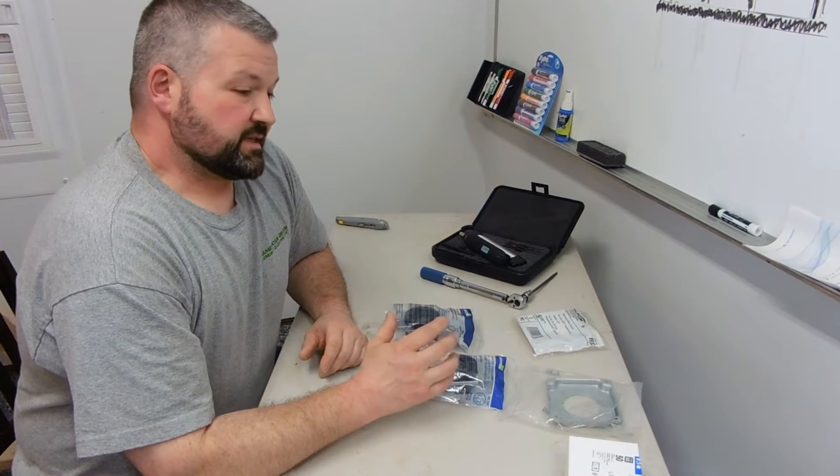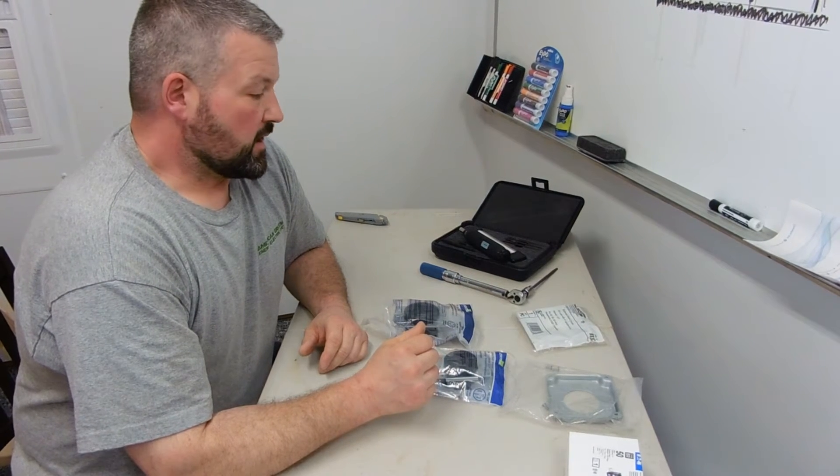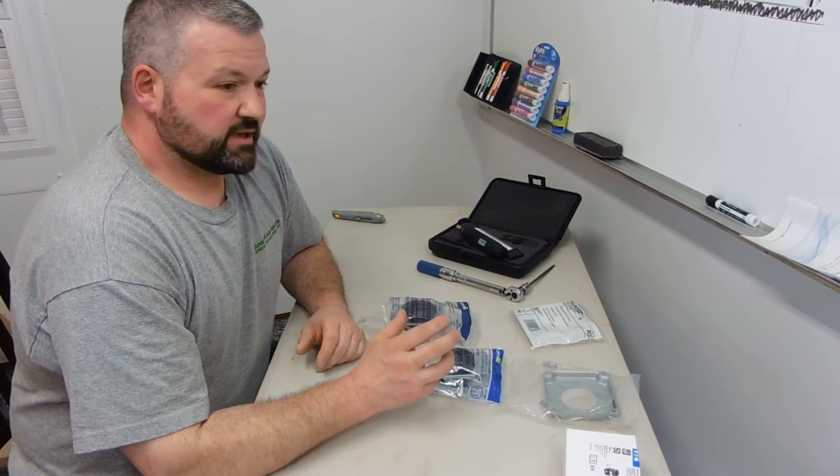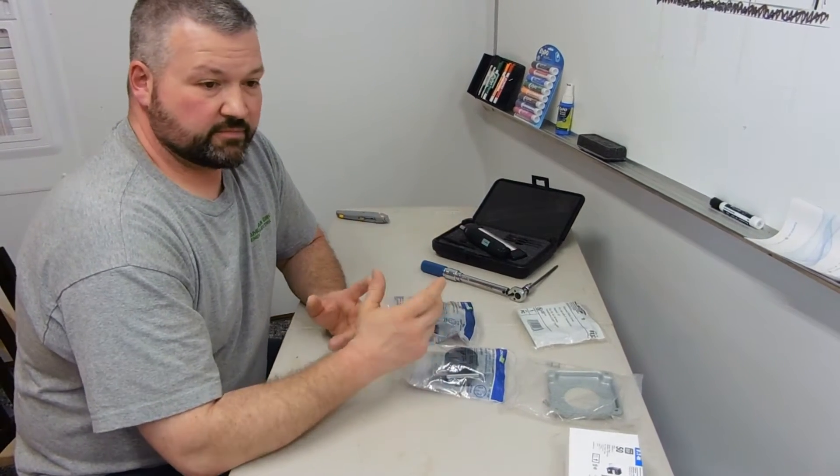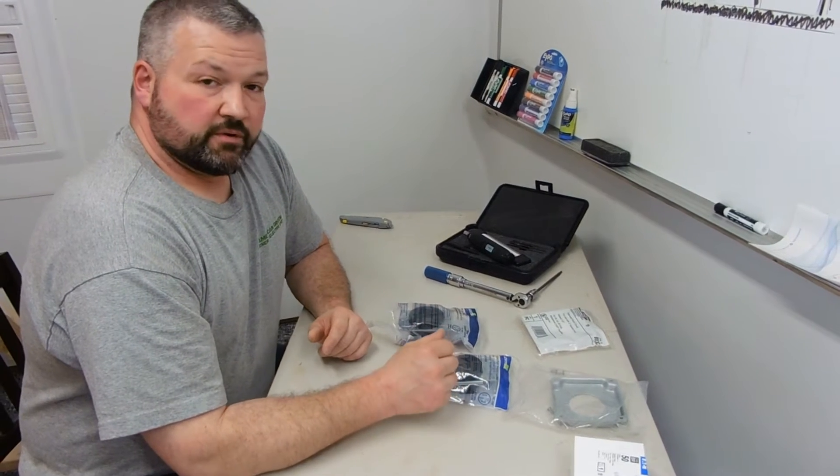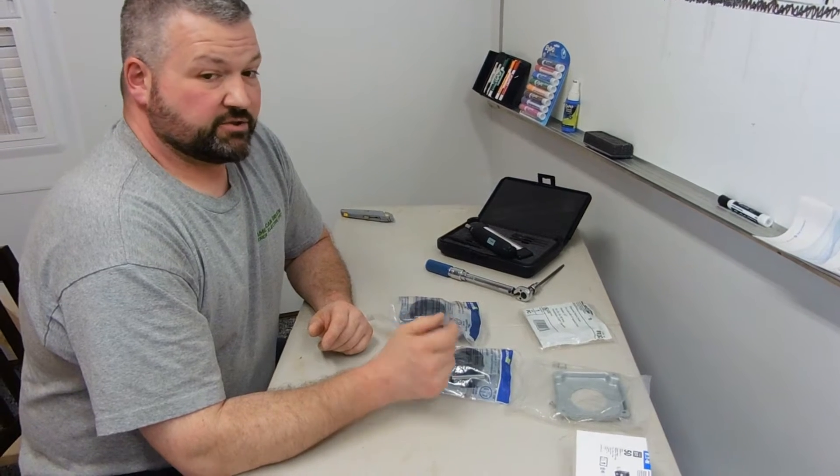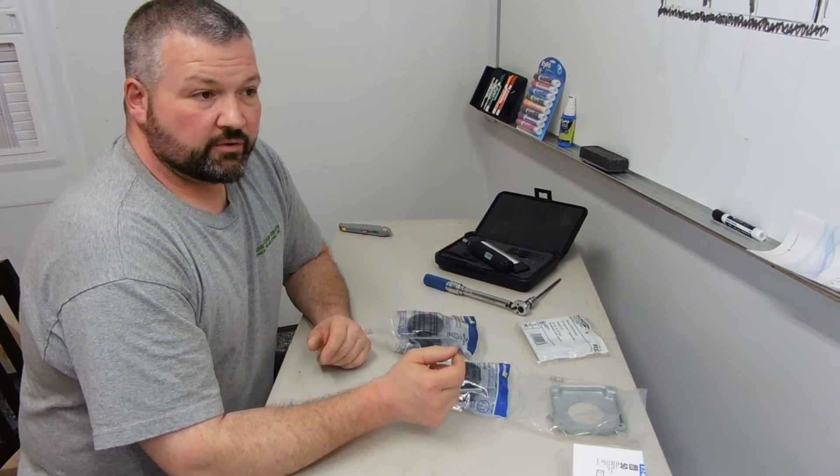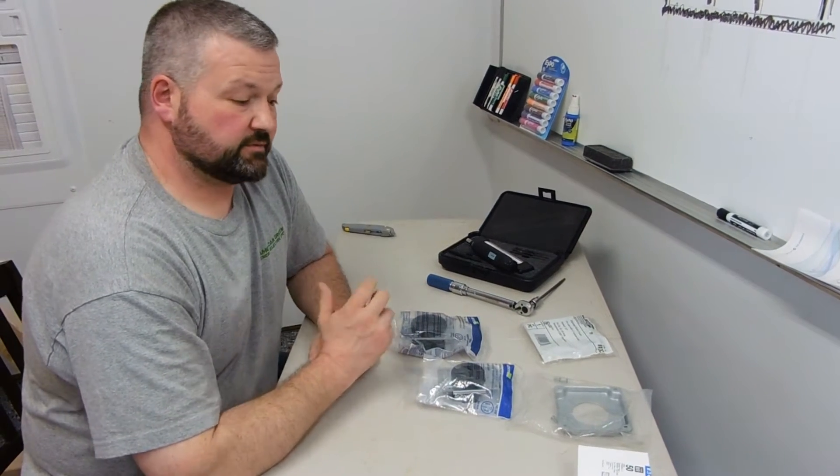The number one reason they say they want a cord and plug is so if they move they can take it with them. There's really typically a box right there. You can just take the whip, shut the breaker off and take the whip out if you want to take it with you. The other reason is it's actually cheaper from a contractor's point of view and in my opinion is a better connection with less points of failure.